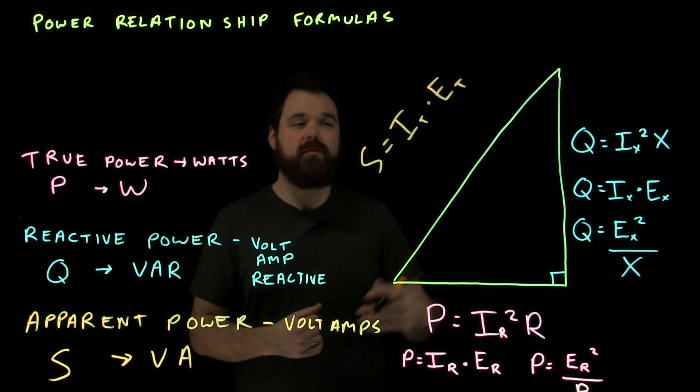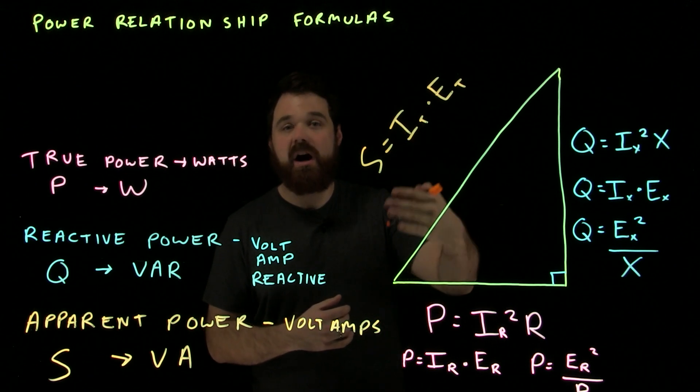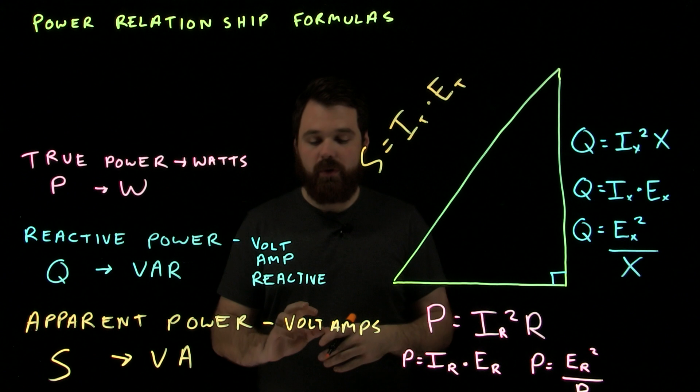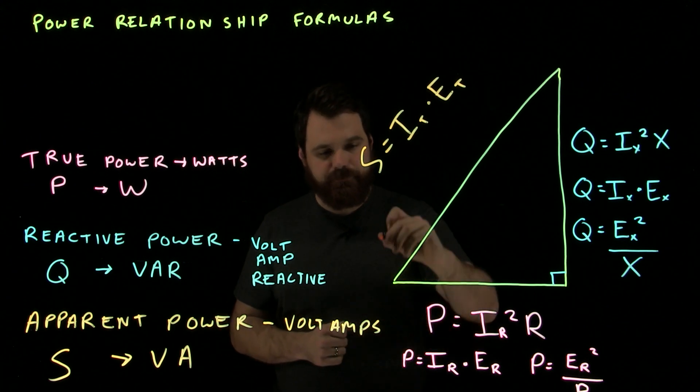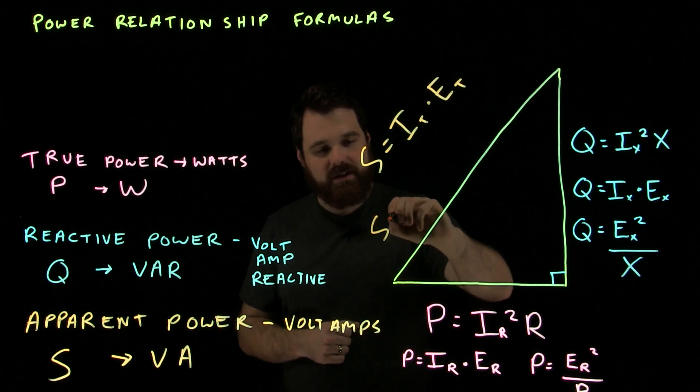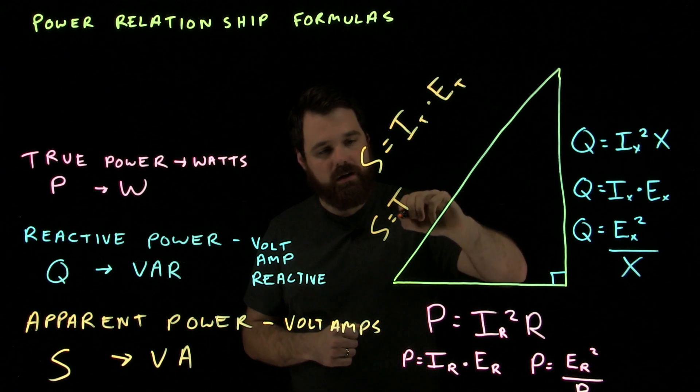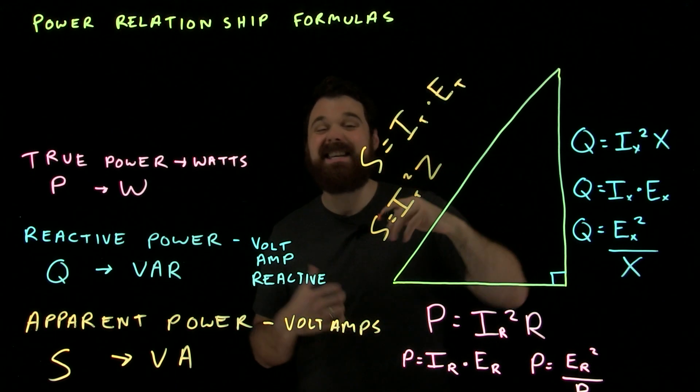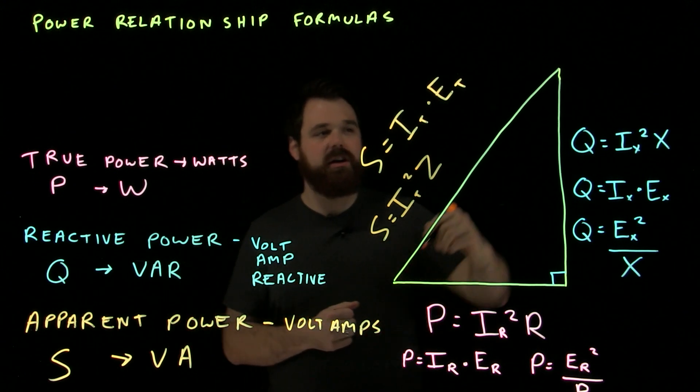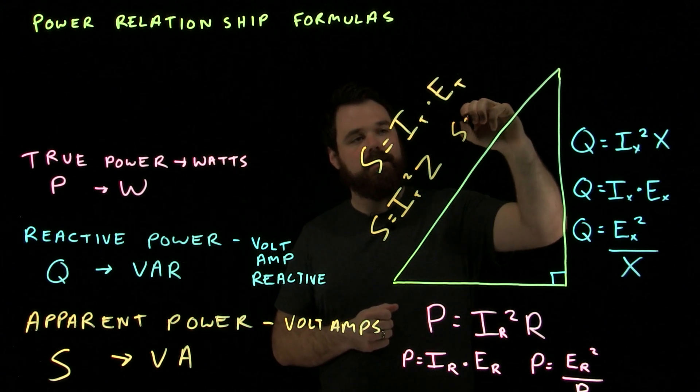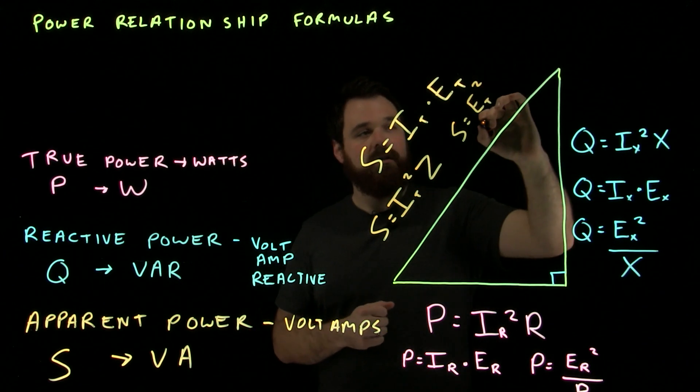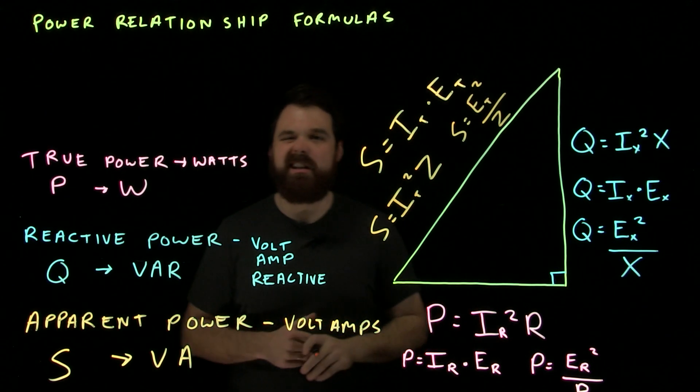is going to be S equals I total times E total. So, total current, total voltage, and you can call it the I line and E line. It's pretty common, too. But that's what it is. It's the total volts and the total amps in the whole circuit. We can also use S equals I total squared times the impedance or the total opposition in the circuit. Or, we can go S equals E total squared divided by that total impedance in the circuit.